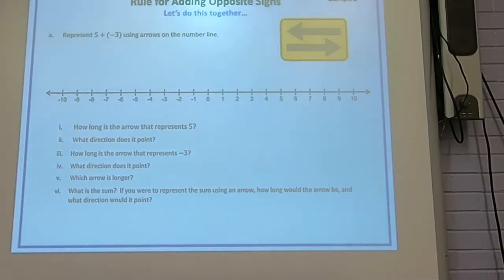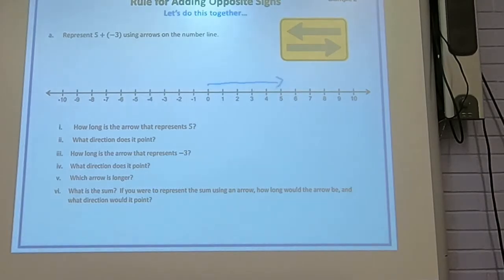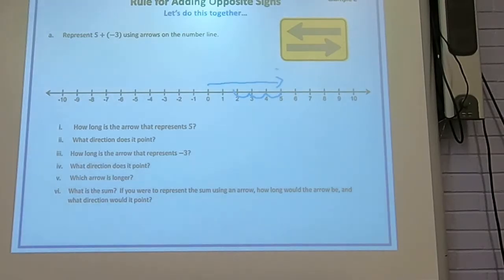Now we have one positive and one negative — a little bit harder, but look at the number line. I have positive 5, so I start at 0. My vector has a magnitude of 5 and goes right. From there I'm going negative 3, so left 3: 1, 2, 3. My second arrow ends right here on 2, so my answer is 2.